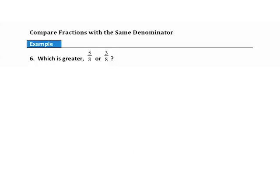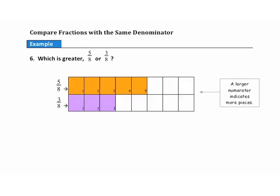Compare fractions with the same denominator. Example 6: Which is greater, five-eighths or three-eighths? Both fractions have denominators of eight, which means the pieces are the same size. So to determine which fraction is larger, we just look at the numerators — five is greater than three, so five-eighths is the larger fraction.